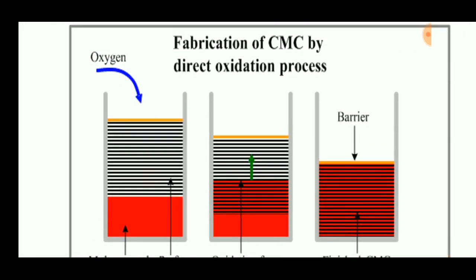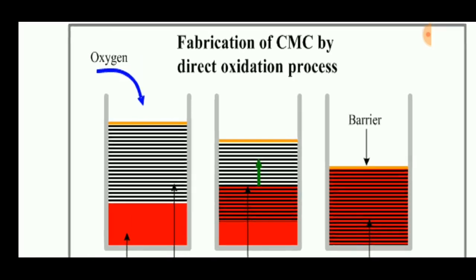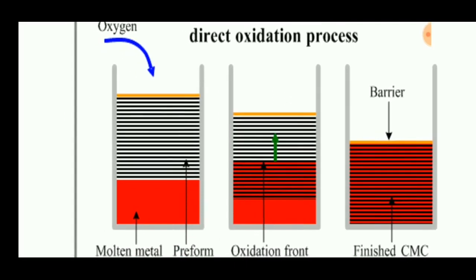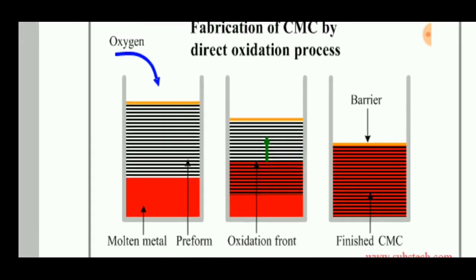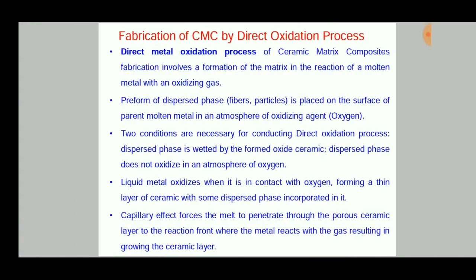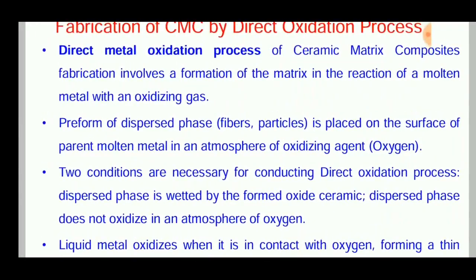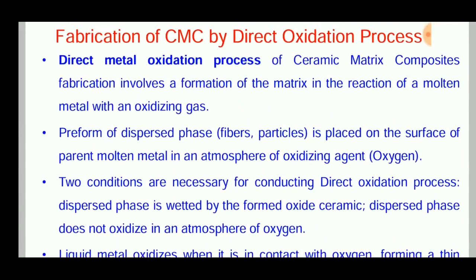In the liquid infiltration process, a plunger is used to push the matrix material into the reinforcement, whereas here oxygen is used as the pushing force to make the reinforcement wet on the molten metal, called the matrix.